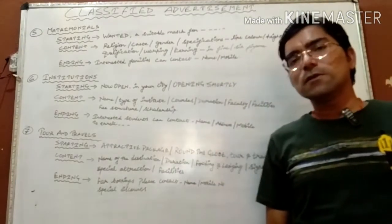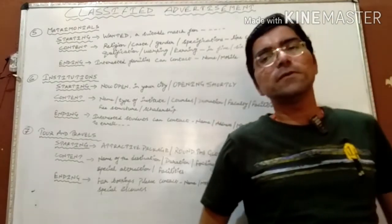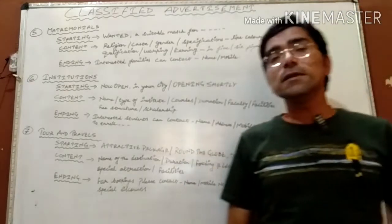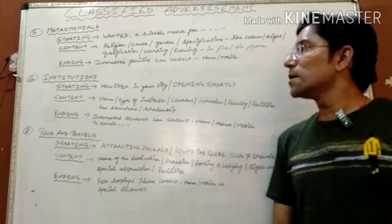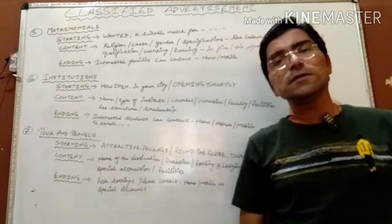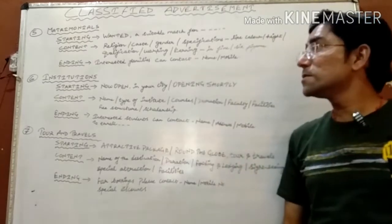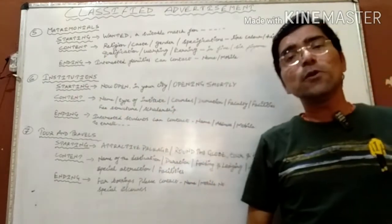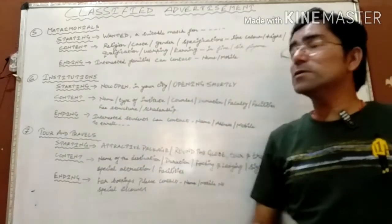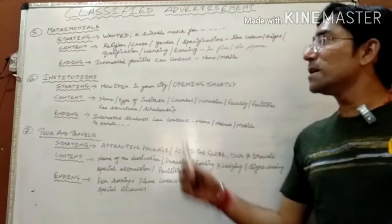Good morning and welcome once again to our online classes. Today we are going to start the remaining topics of classified advertisement which we left in the earlier session. We have divided classified advertisements into three parts: starting, content, and ending. All you have to do is master all three components. To discuss the first one — that is matrimonial.